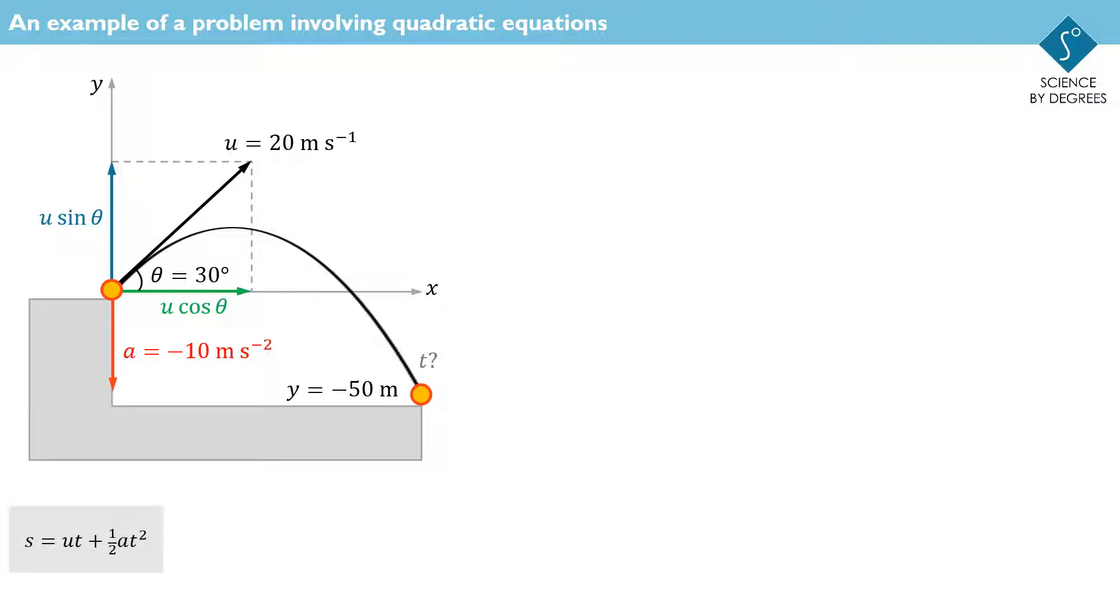We can use this uniform acceleration formula for both directions. It's particularly easy horizontally, as there's no acceleration in this direction, and it reduces to distance equals speed times time. The vertical version includes a half gt squared term for the extra displacement due to the acceleration from gravity.